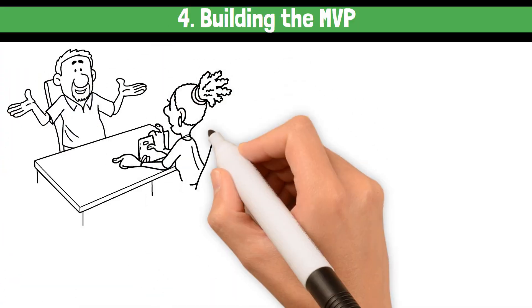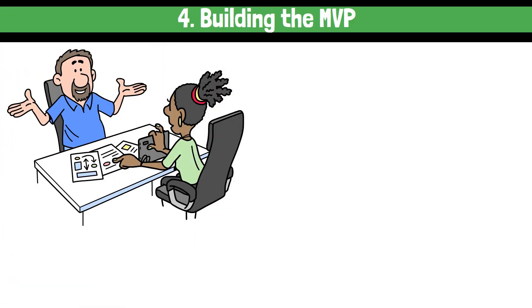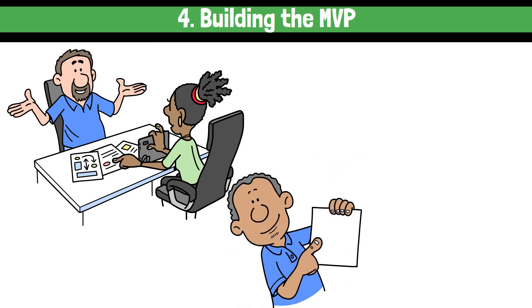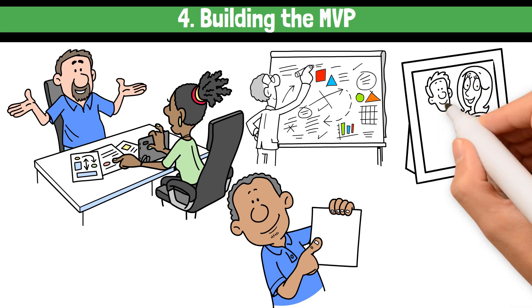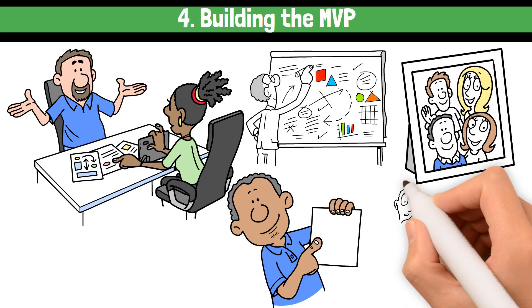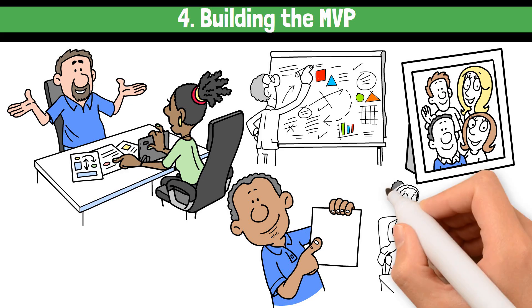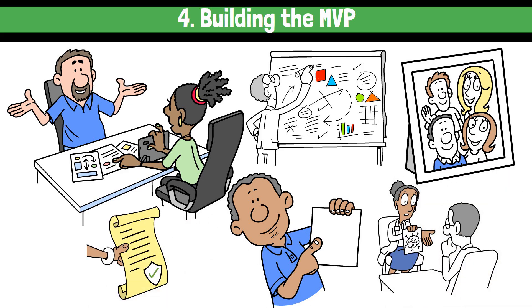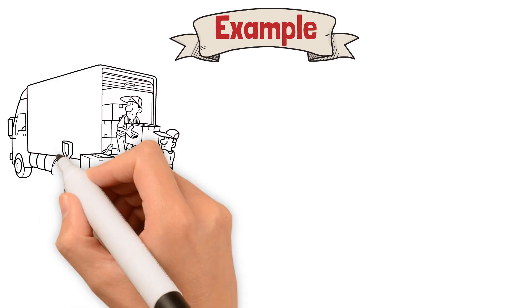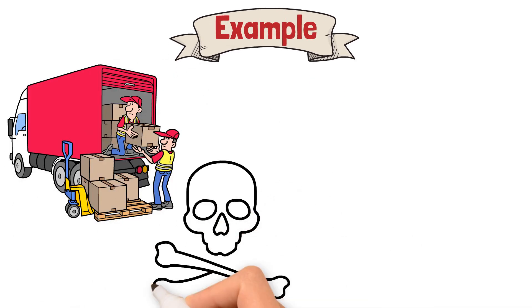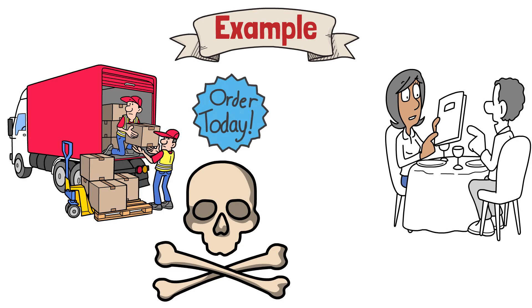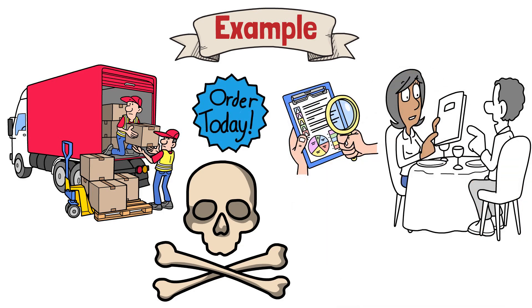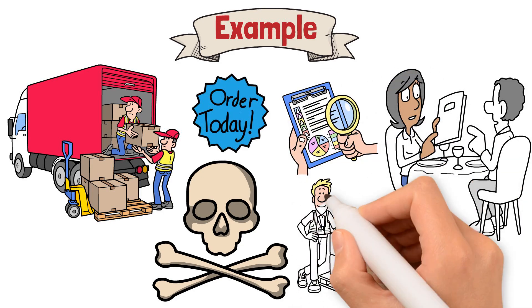Once you've defined your MVP, it's time to build it. The focus should be on speed and efficiency, but quality still matters. Use frameworks like Agile to break the MVP into small, deliverable tasks and work iteratively. For instance, a team building a food delivery MVP might start with a bare-bones app that allows users to browse a limited menu and place orders. Advanced features like user profiles and delivery tracking can come later.